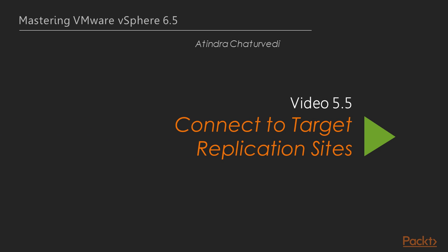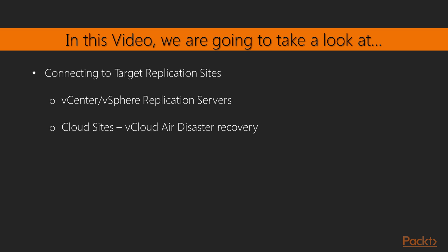In this video, we will cover connecting to target replication sites. Target replication sites are of two types: one is the vCenter vSphere replication server site, as well as cloud sites. So we have the ability to replicate out to the cloud. An example of that is vCloud Air disaster recovery.